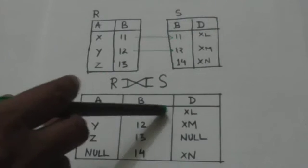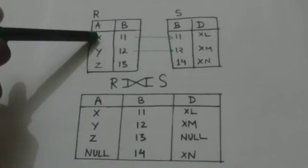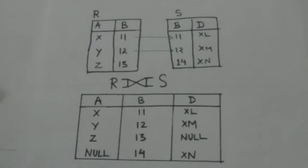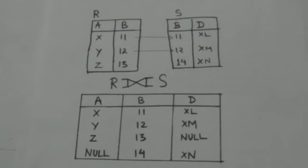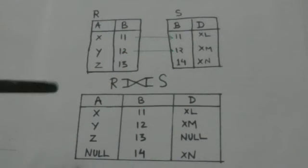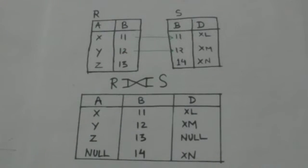This tuple of the resulting relation is formed by combining the tuple of relation R with the tuple of relation S having the same value of attribute B, and then removing duplicate attributes. This tuple of the resulting relation is also formed in the same way.